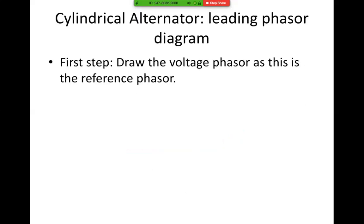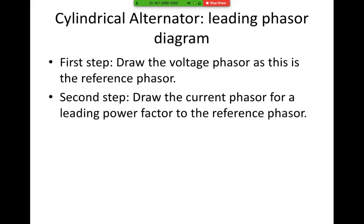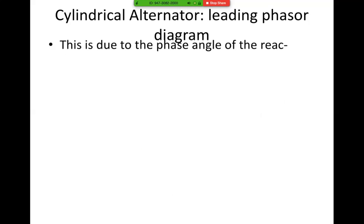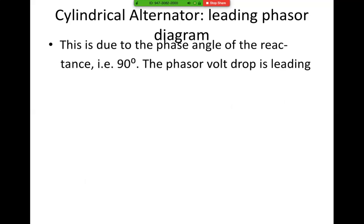Now we look at the leading power factor. Same thing: draw the voltage phasor as the reference phasor. Draw the current phasor for a leading power factor to the reference phasor. Now add the voltage drop caused by the resistive part of the alternator. The voltage drop IaRa is in phase with the current. This is due to the phase angle of the reactance, i.e. 90 degrees.